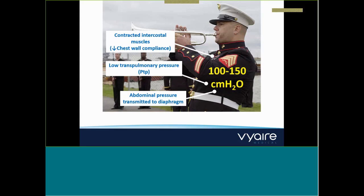To apply some context: when a musician plays the trumpet, pressures at the airway opening can be up to about 150 centimetres of water pressure. Trumpet players generate these high pressures hundreds or thousands of times a day, but they don't develop barotrauma or ventilator-induced lung injury. The reason is that it's not the airway pressure per se that's important — what's important is lung stretch, or the transpulmonary pressure, the pressure across the lung. To generate such high airway pressures, the trumpet player contracts respiratory muscles to generate high pleural pressure so that the transpulmonary pressure is not increased.